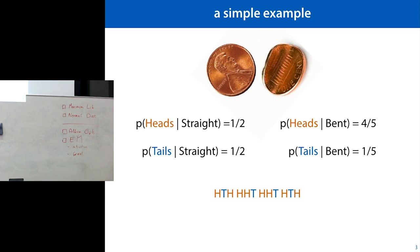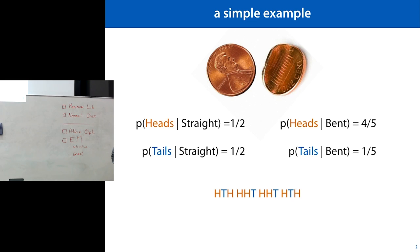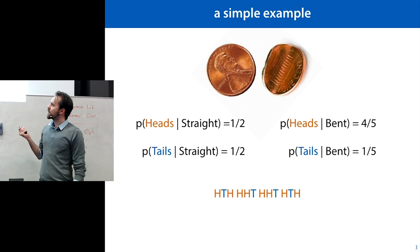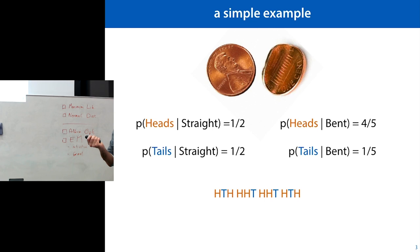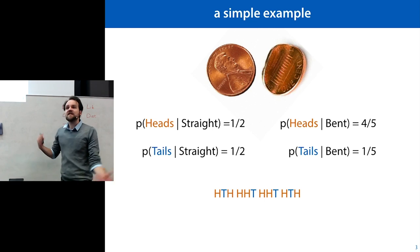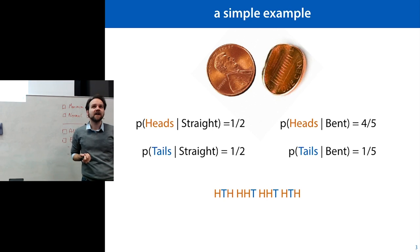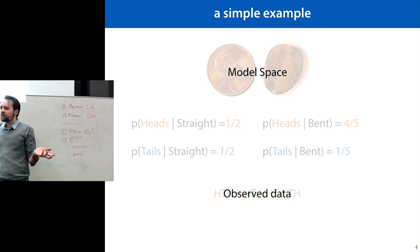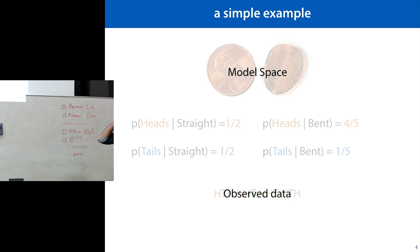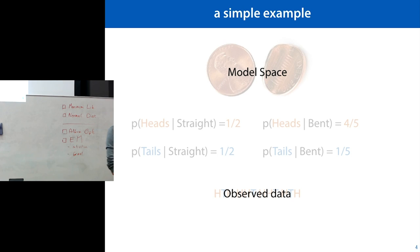Imagine we put these coins in a bag and ask a friend to pick one without showing us, flip it a number of times, and tell us what comes out. Head, tails, head, head, and so on. The question is: given this data that we observed, which of these coins is most likely to have been the one the friend picked? That's a metaphor for model selection in statistics and basically almost all of what we do in machine learning. We observe some data, we have a class of possible models, and we need to figure out which model is best.